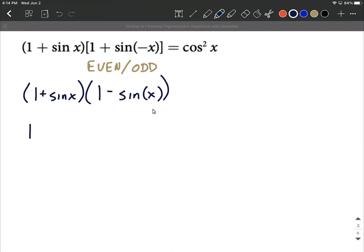Outer, 1 times negative sine of x, so minus sine of x. The inner is going to be positive sine of x times 1, so that's plus sine of x.